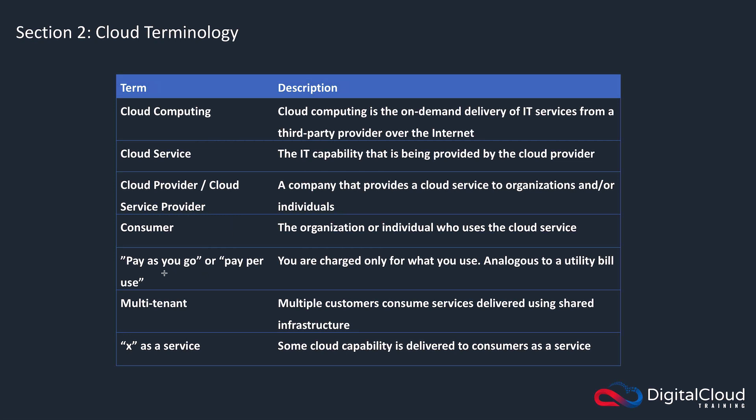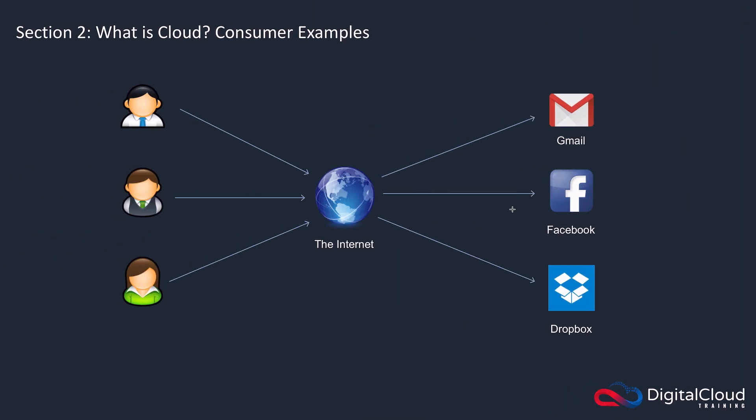With cloud, you typically pay on a pay-as-you-go basis — there are exceptions, but this is a very common way you're charged. That means you pay for the amount of the service that you use. This is very similar to a utility bill. With your electricity bill, you pay for the amount of electricity you use. You don't pay for the power stations, the grids, or the pylons, but those costs are reflected in what you pay. You typically just pay for the amount that you use — the same with these cloud services.